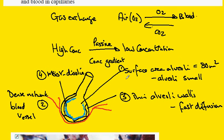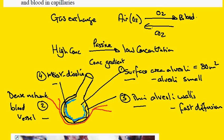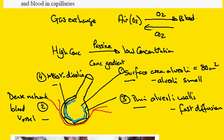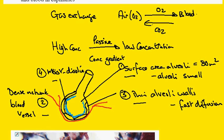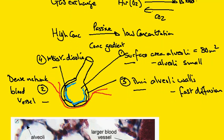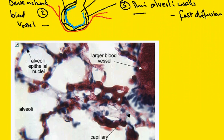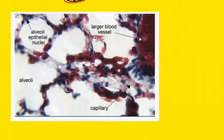The four adaptations are: large surface area, dense network of capillaries, thin alveoli walls for fast diffusion, and moist walls for the fast dissolving of gases. Let's look at a real image of the alveoli taken with the light microscope.